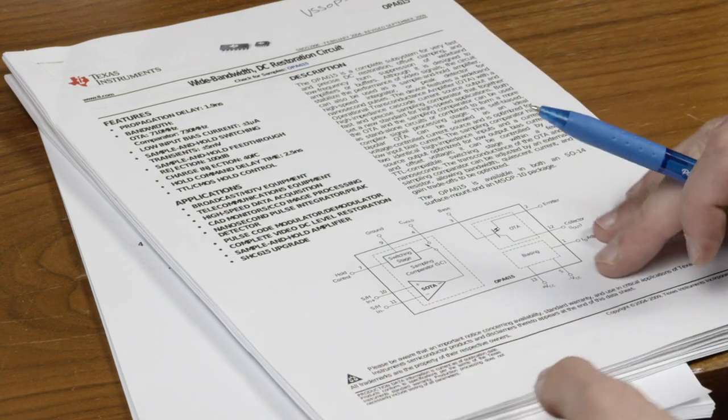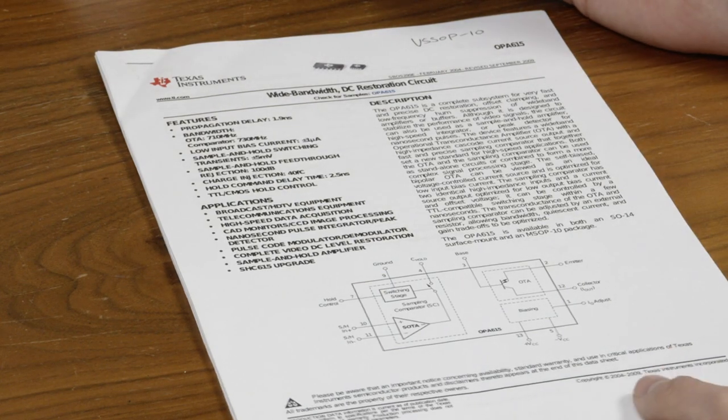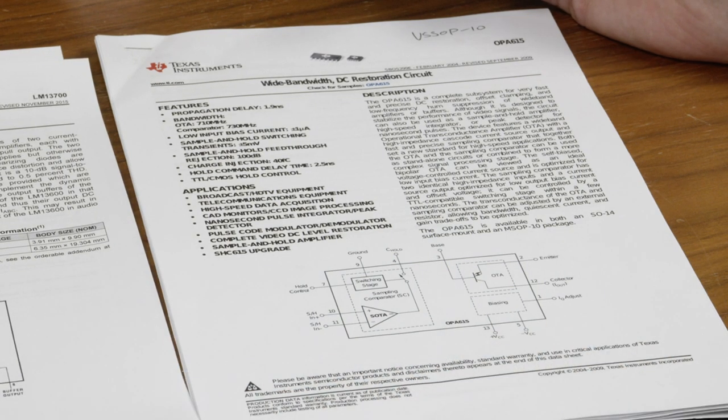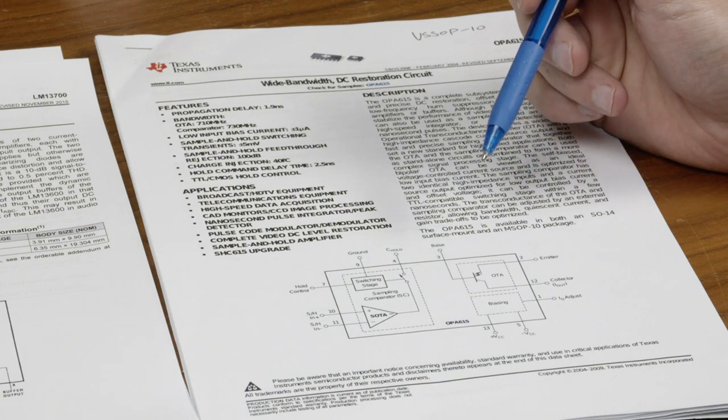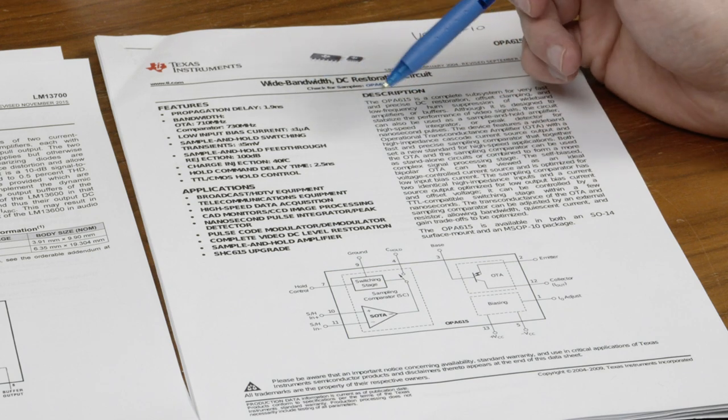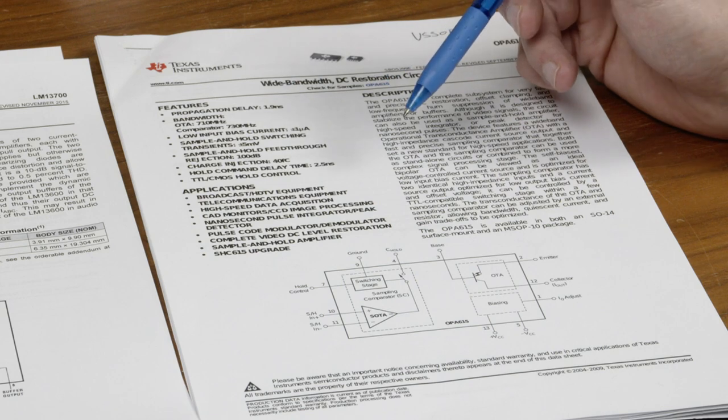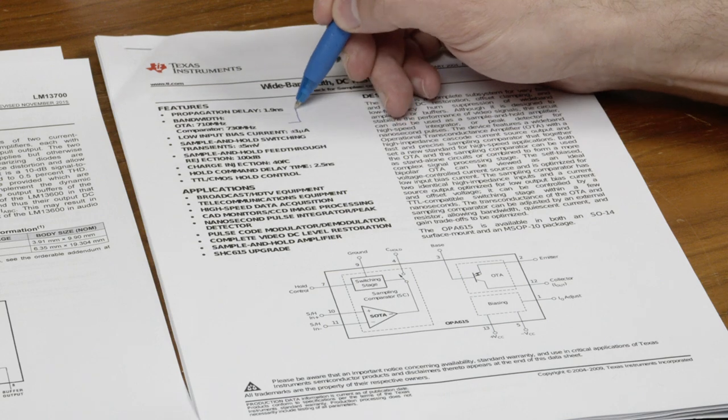This is a $20 chip. So this is a dual operational transconductance amplifier. So is that one, but it's designed for quite a different purpose. Let's look at the features. Very low propagation delay, under two nanoseconds. Bandwidth, 710 MHz for the OTA, 730 MHz for the comparator. So this is a high speed, high bandwidth chip.